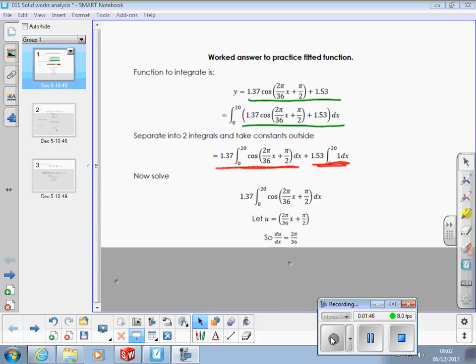Then we differentiate that function, so the constant, the addition of pi over 2 disappears, and we end up with 2 pi over 36. We rearrange that for dx, so we get dx is 36 over 2 pi times du. Follow that so far. Yep.